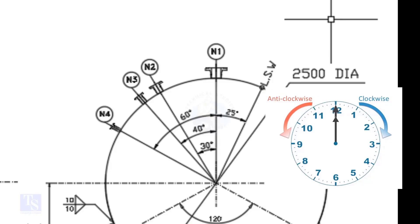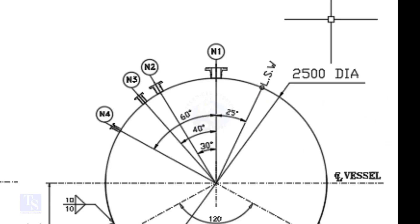We are going to mark the centers of four nozzles: N1, N2, N3, and N4. N1 comes at 0 degrees, N2 at 30 degrees, N3 at 40 degrees, and N4 at 60 degrees.